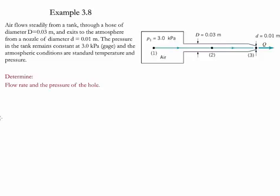To analyze this problem, the first step is to write the conditions at each one of the points. We have three points: one, two, and three. At point one, the pressure is equal to three kilopascals and it has an elevation of z1. The fluid is stationary in the tank so the velocity is equal to zero, and since it's not moving we cannot apply continuity so we do not address the dimensions.